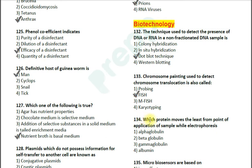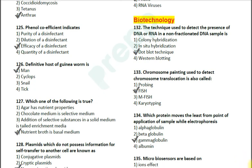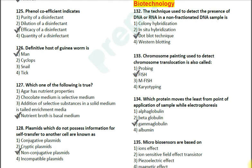Question number 134: Which protein moves the least from the point of application of sample during electrophoresis? Options: 1. alpha globulin; 2. beta globulin; 3. gamma globulin; 4. albumin. The correct answer is option 3 — gamma globulin. Albumin moves the farthest. Among the globulins, gamma globulin is the heaviest, so it moves the least and remains closest to the well where the serum sample is loaded.